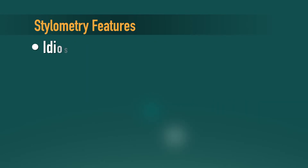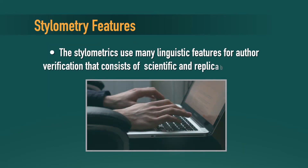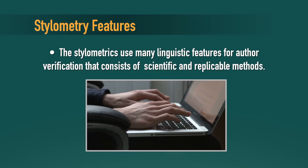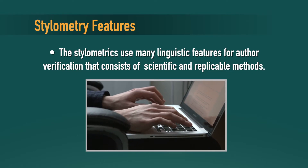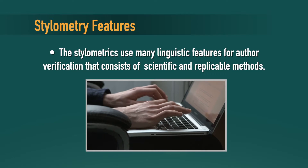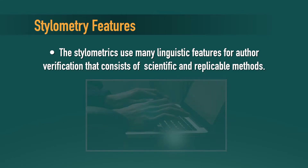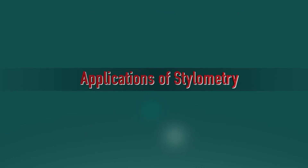Idiosyncratic features are based on individual usage anomalies like misspellings and grammatical mistakes. Stylometry uses many linguistic features for author verification that consist of scientific and replicable methods.